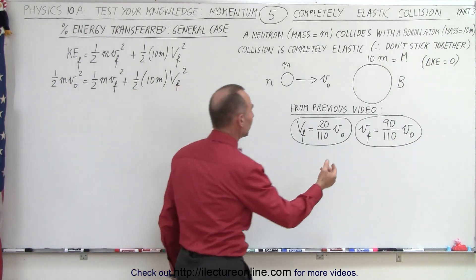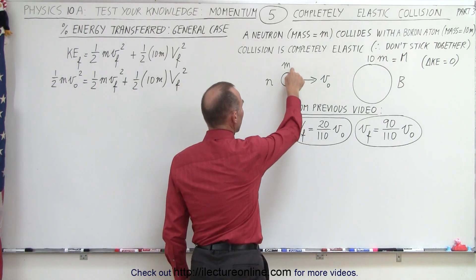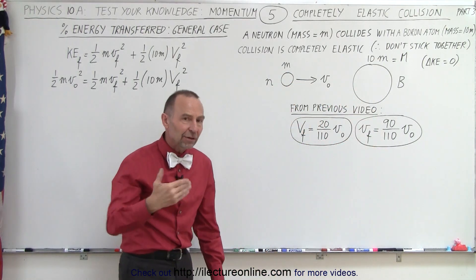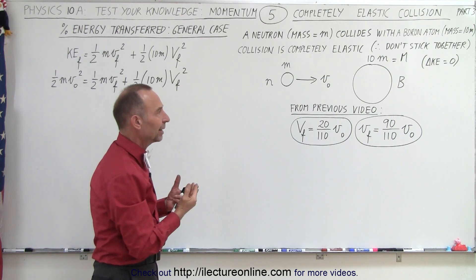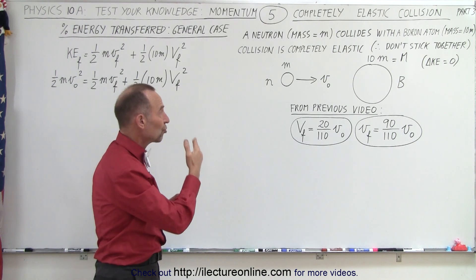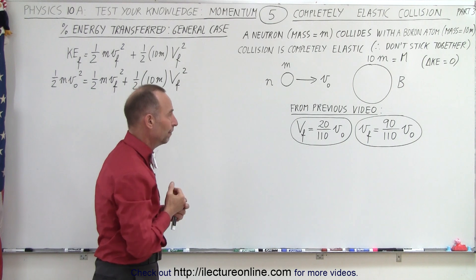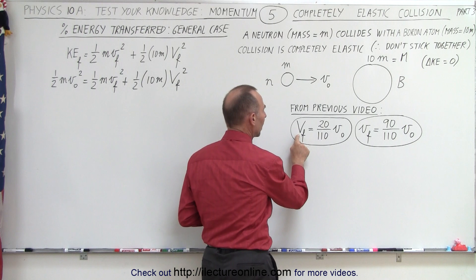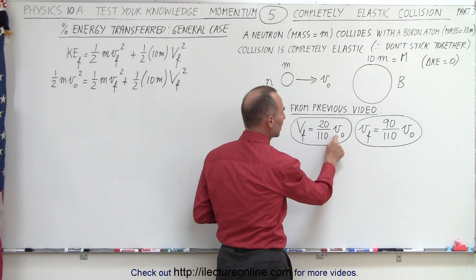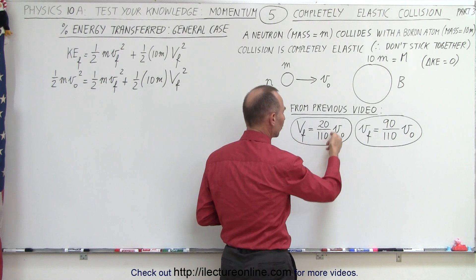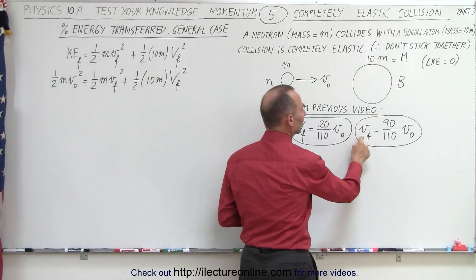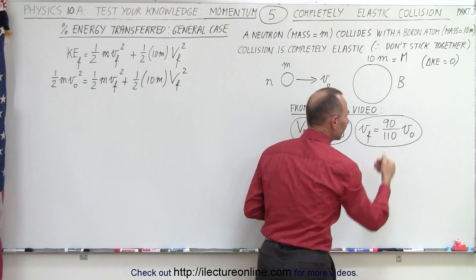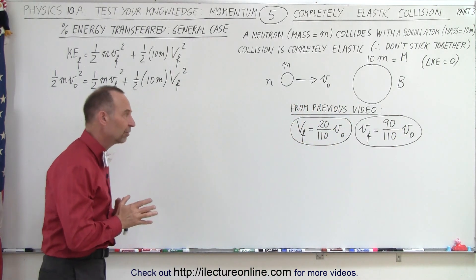Here we have the example where we had a single neutron with mass m colliding with a boron with mass 10m. In the previous video, we found that about 33% of the energy was transferred from the neutron to the boron. We also found that the final velocity of the boron relative to the initial velocity of the neutron had a ratio of 20 divided by 110, and the final velocity of the neutron compared to the initial velocity had a ratio of 90 divided by 110.